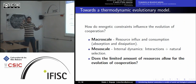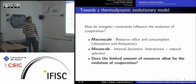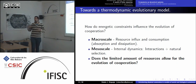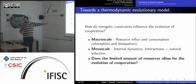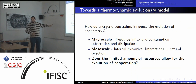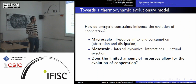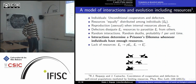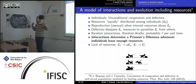In the model there is a macro scale — resource influx and consumption — and a mesoscale of internal dynamics: interactions between individuals and natural selection. Mutations are omitted here, though simulations with mutations behave essentially the same. The results are not significantly affected.